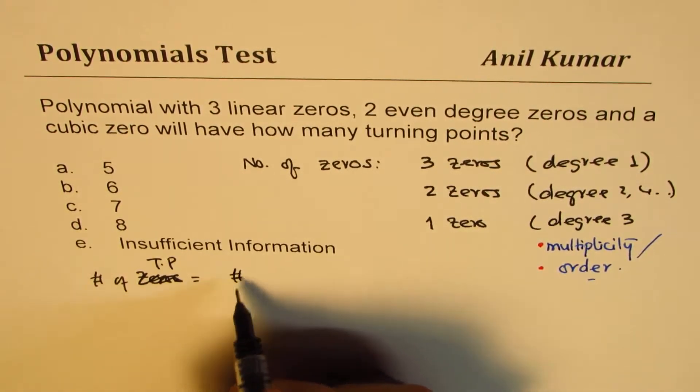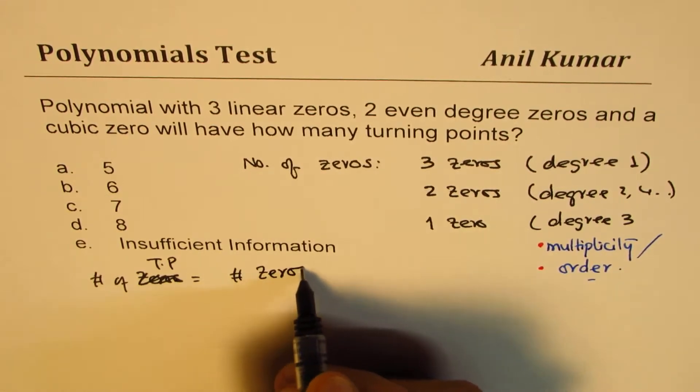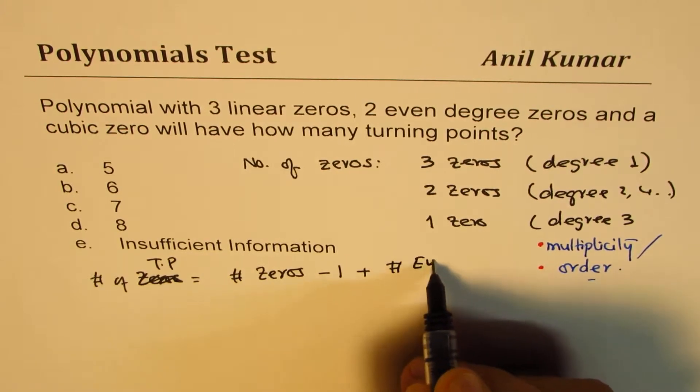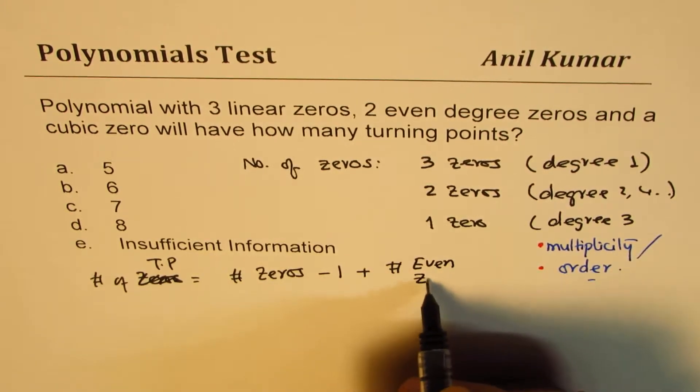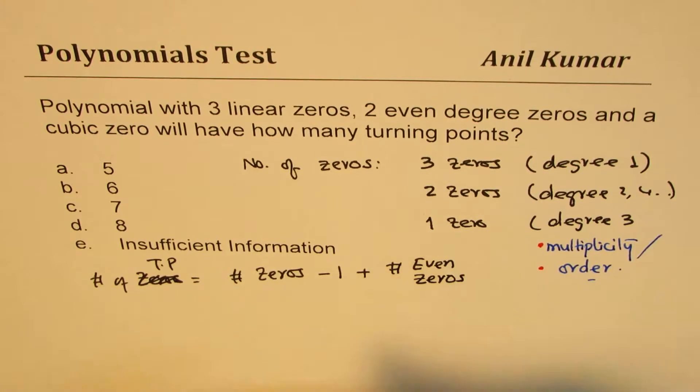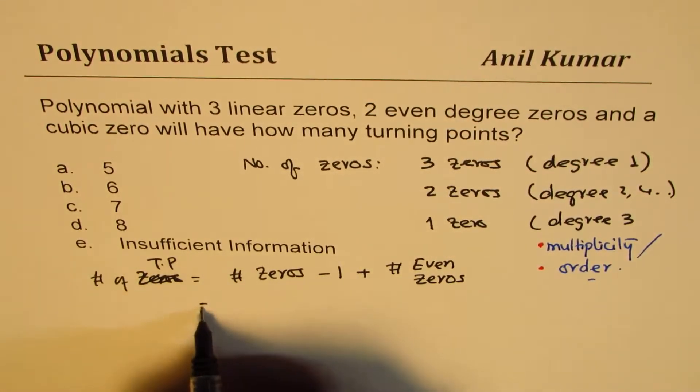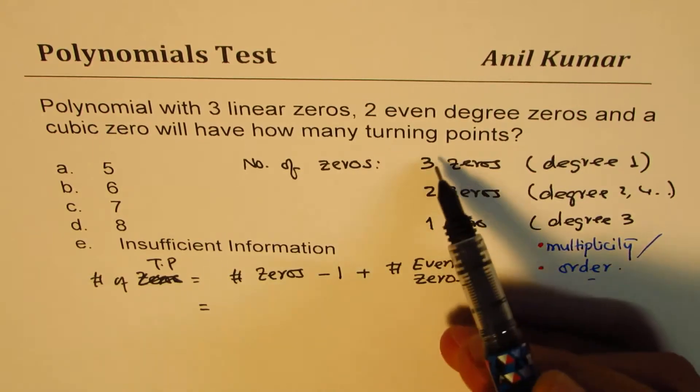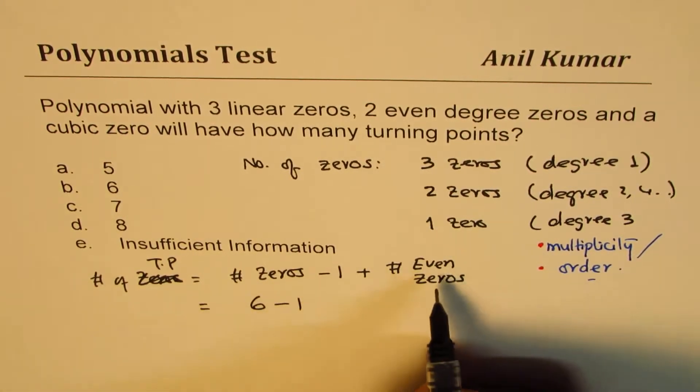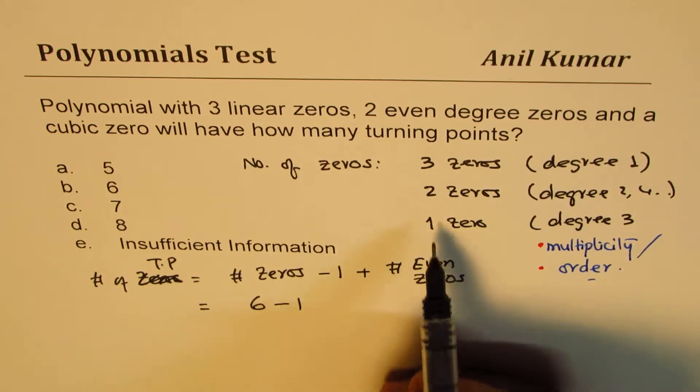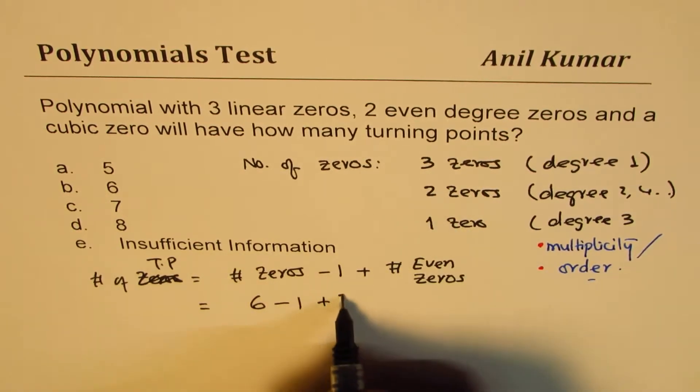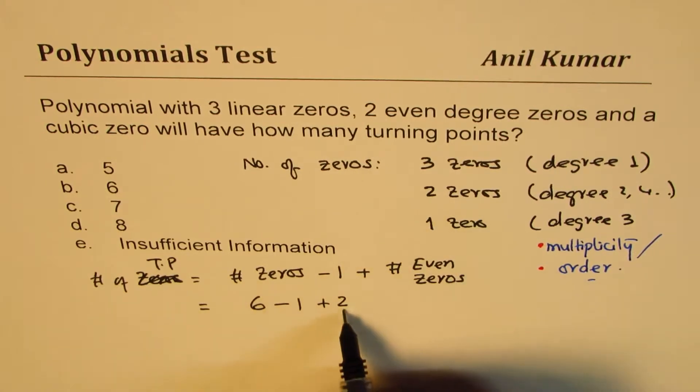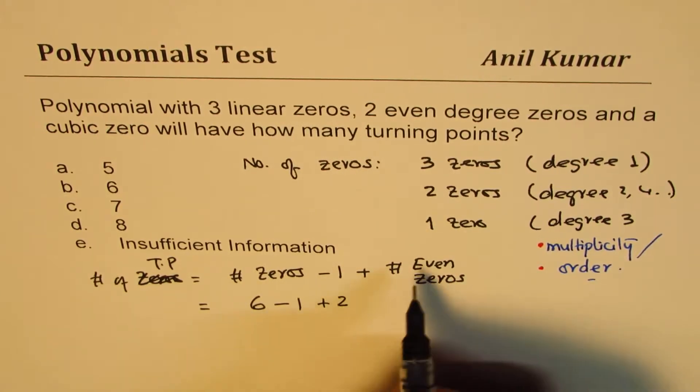So number of turning points is equal to number of zeros minus one plus number of even zeros. That's the formula. So number of turning points in this case will be - we've got three, two, five and one, six zeros. There are six zeros in all, take away one and how many of them are even? Two, plus two. Since that even zero we have an additional turn, that is why we have this two here.